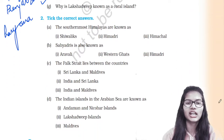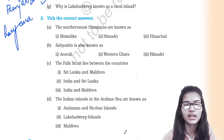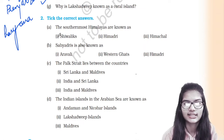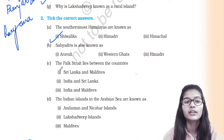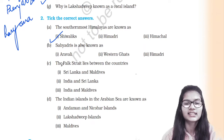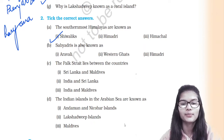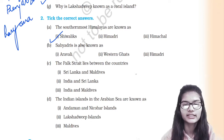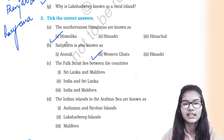Now we move to the section: take the correct answers. The southernmost Himalayas are known as Shivaliks. Remember this important point. Also, Sahyadris is another name for the Western Ghats — the Western Ghats are also called Sahyadris.